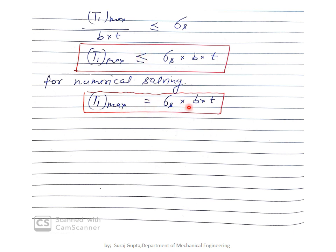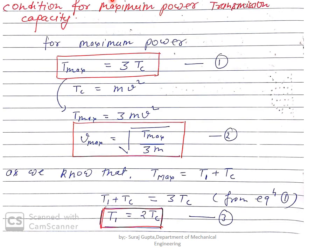If T1_max is more than sigma_s·b·t, the material will break down. If T1_max is less than this value, the material will not break down and working will continue.